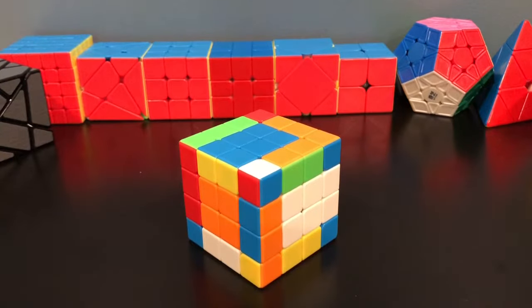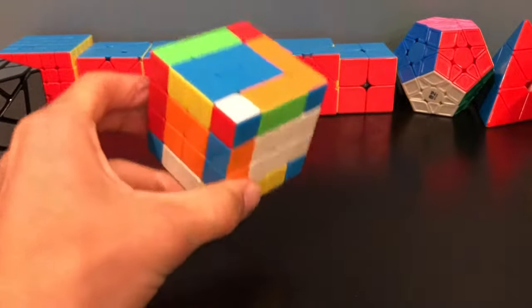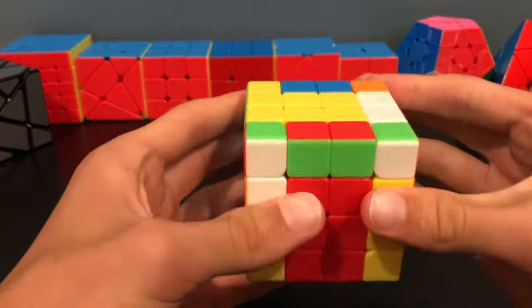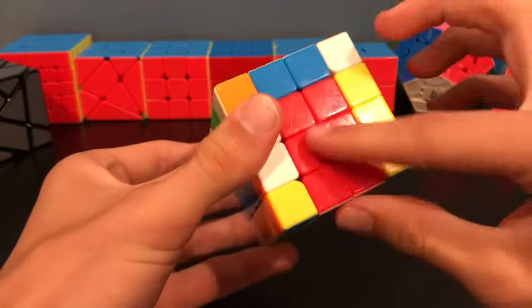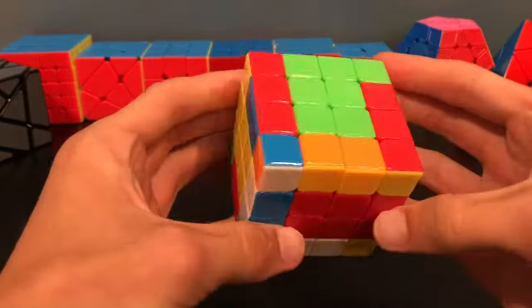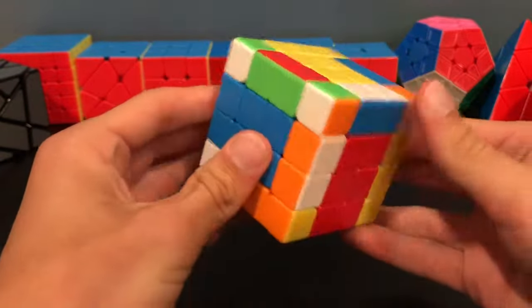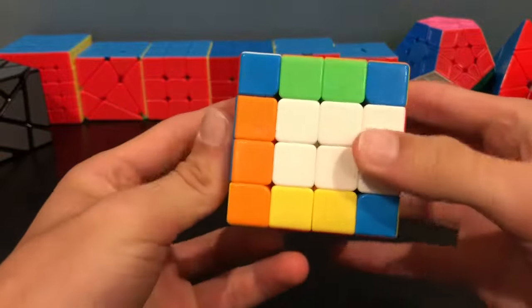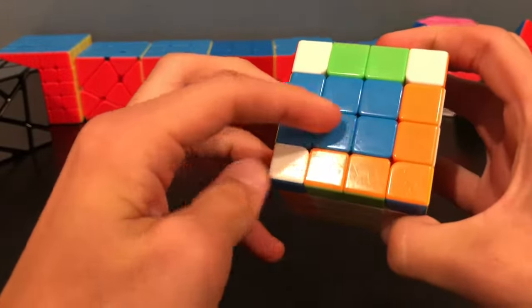The method we're going to be learning today is called the reduction method. Our goal is to reduce the 4x4 into a 3x3. Here, as you have seen, I've already done a few of the steps, so I've gotten my centers together and I've gotten my edges paired up, so now all that's really left is a 3x3. This is your goal. Then, at this point, you can just solve it like a normal 3x3, pretending that this is one edge and this is one center.